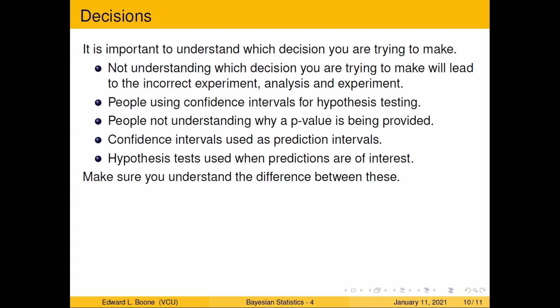Not understanding which decision you're trying to make will lead to the incorrect experiment, analysis, and inference. People use confidence intervals for hypothesis testing and that's even taught in classes, but it only works if it's a two-sided test. If you're doing a one-sided test, like something is below a limit, then the confidence interval doesn't work.